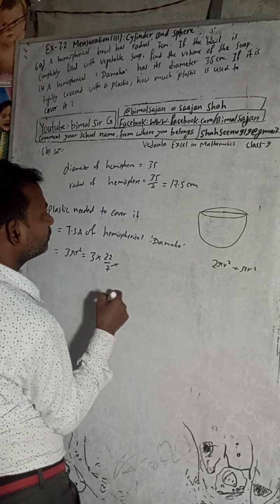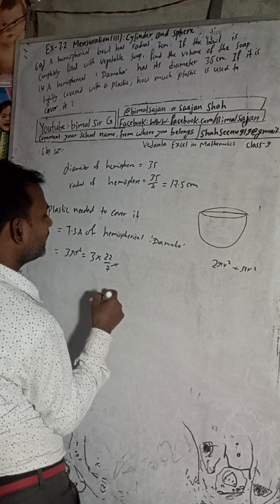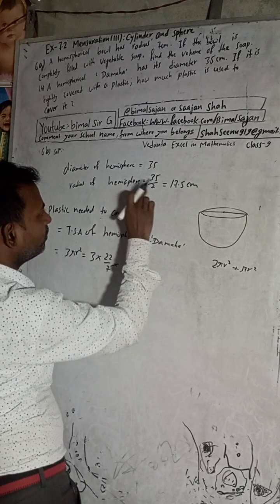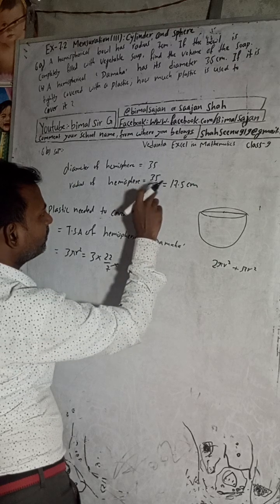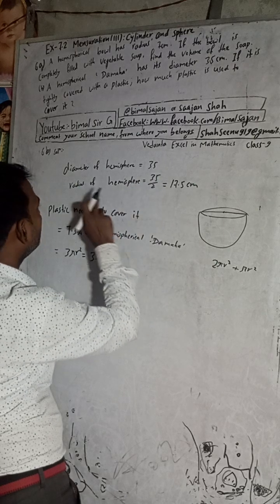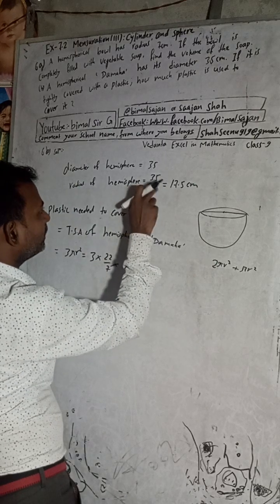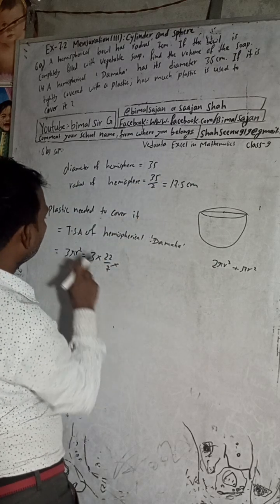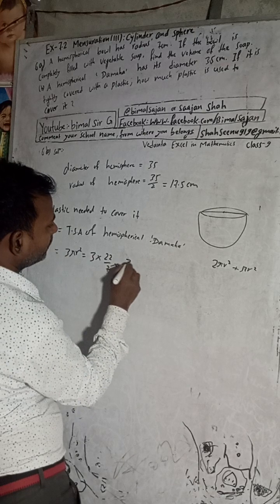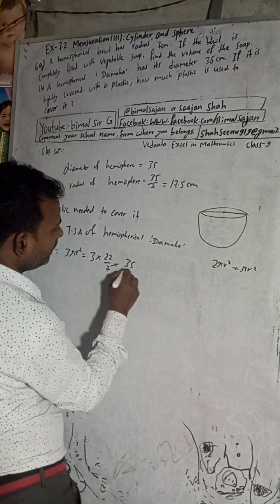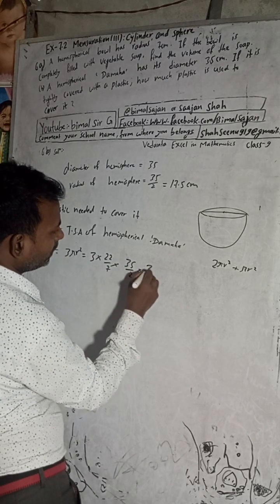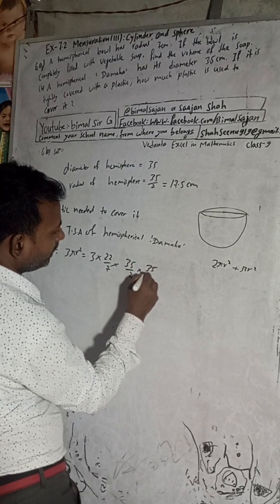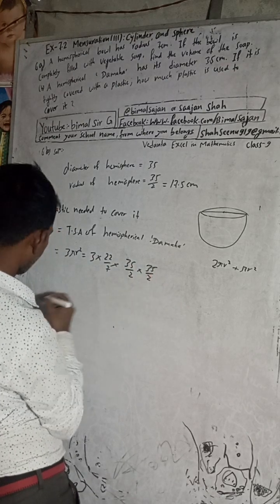For easy cancellation, I will put the value as 35 by 2 instead of 17.5. So the expression becomes 3 × (22/7) × (35/2) × (35/2).